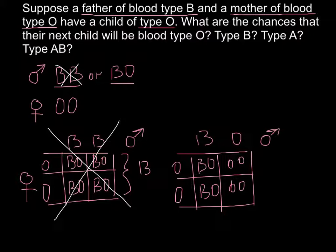As you see, this is the only way when the father, who is genotype BO, and the mother, who is genotype OO, may have a child whose genotype also would be OO. And this is going to be 50%.